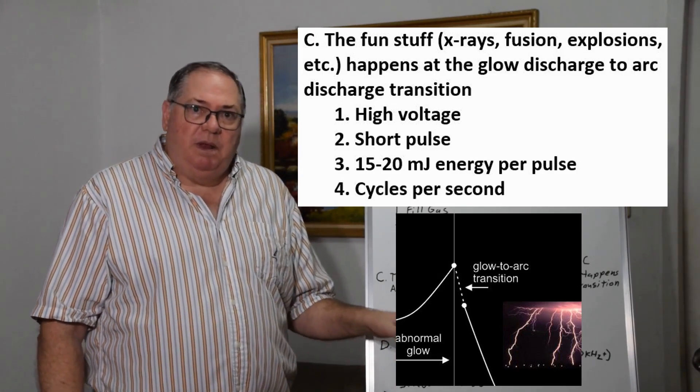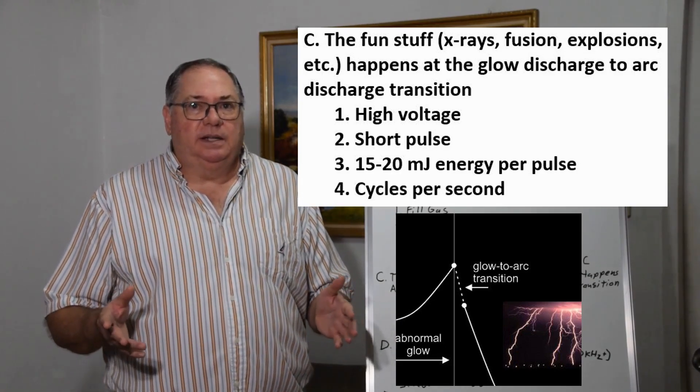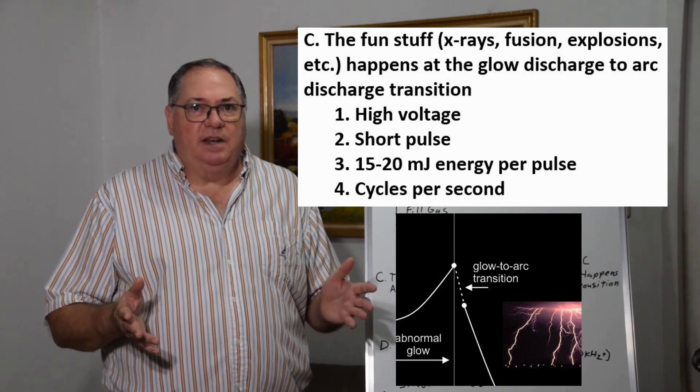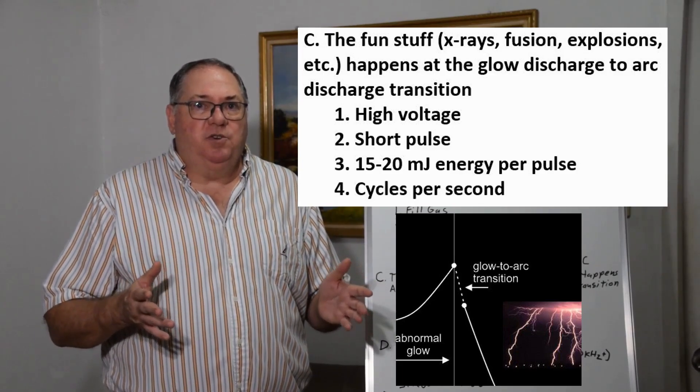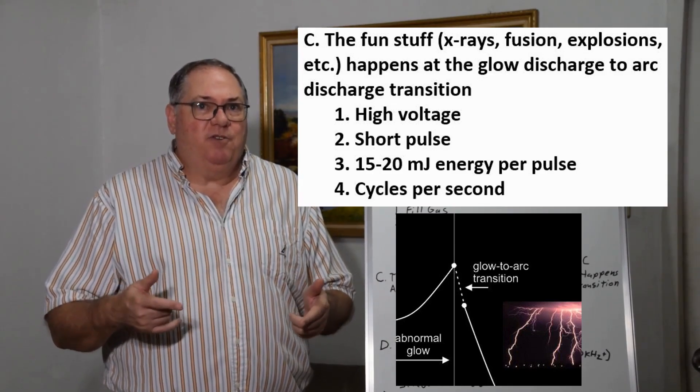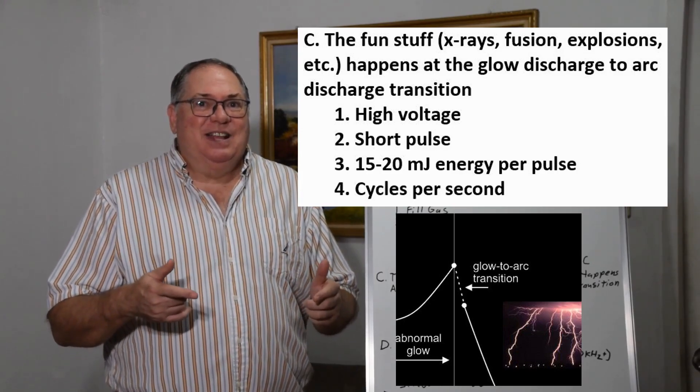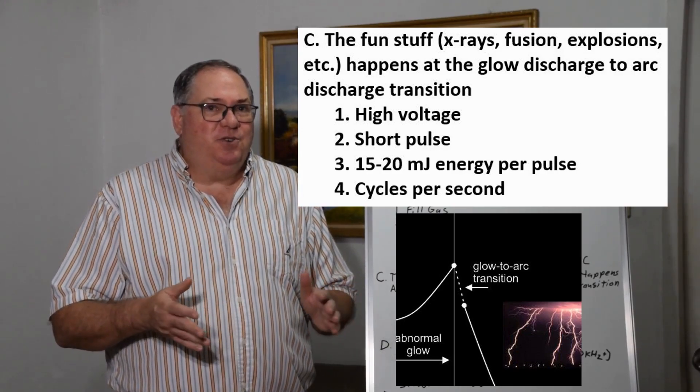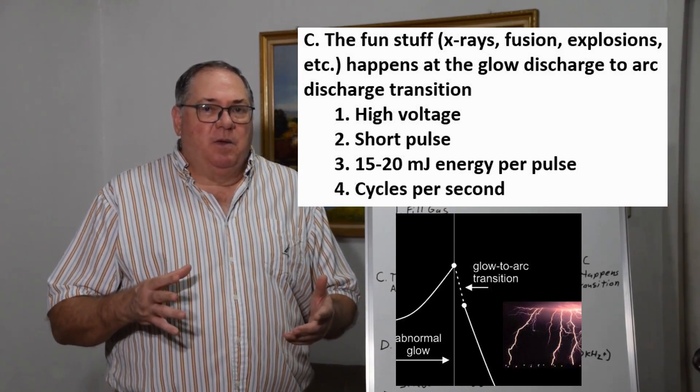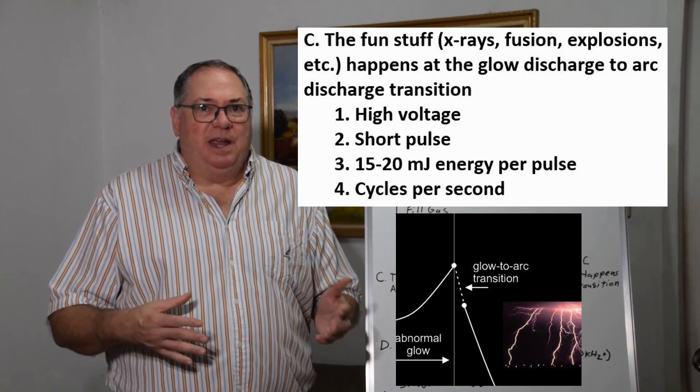We had to have minimum energy per pulse. In our apparatus, which is about 30 centimeters, we measured it to be 15 to 20 millijoules per pulse. The current transformer interfered with measurement, so 10 millijoules may be sufficient, but we couldn't find the number without affecting the breakout.